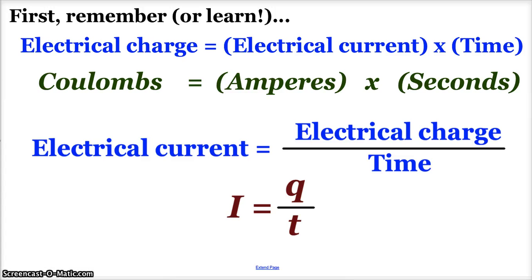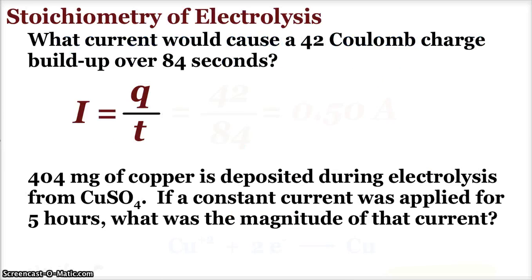Let's use this in some stoichiometry with some sample problems. First of all, what current would cause a 42 coulomb charge to build up over 84 seconds? This is simple plug and chug: charge over time, coulombs per second, and that is our definition of an amp. So this is a half amp.